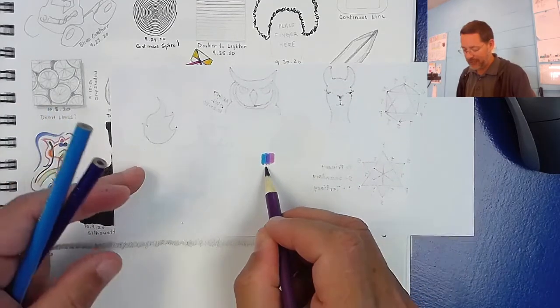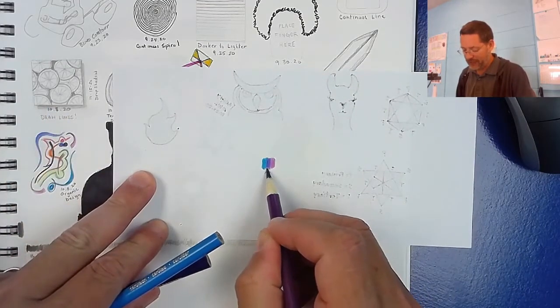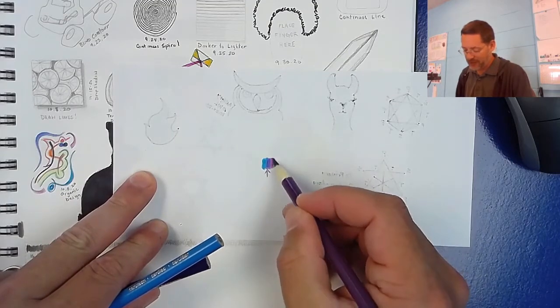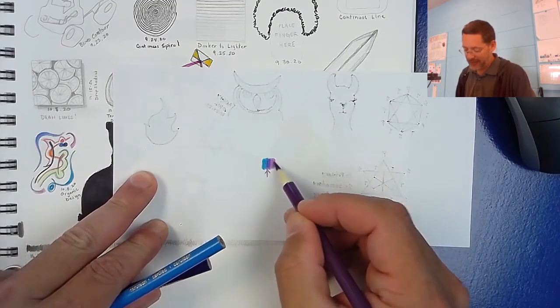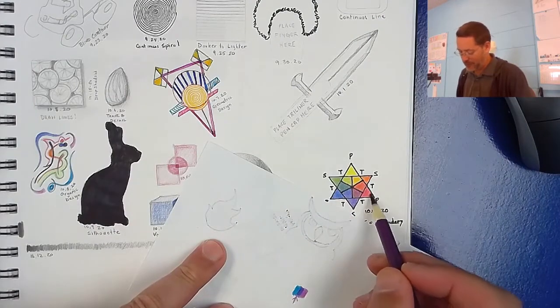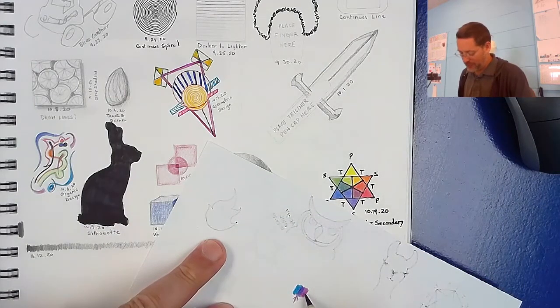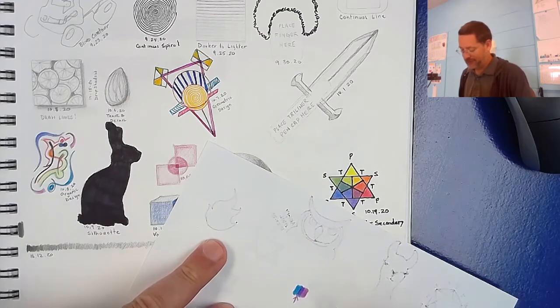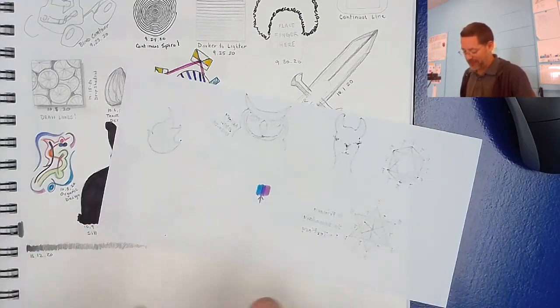If it was a more bluish purple I would have needed to stick it in between those two, but because it's a little more red it goes on the other side. You can refer to your color wheel: blue, purple, red, blue, purple, reddish, okay if that makes sense to you I hope that it does.